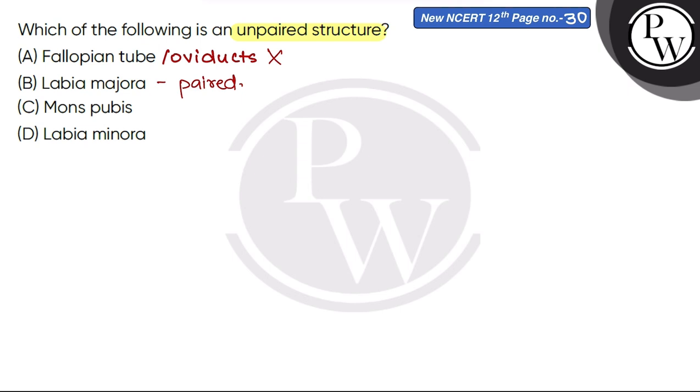Then mons pubis - mons pubis is a cushion of fatty tissue which is covered by skin and pubic hair. This is also part of female external genitalia and it is unpaired.